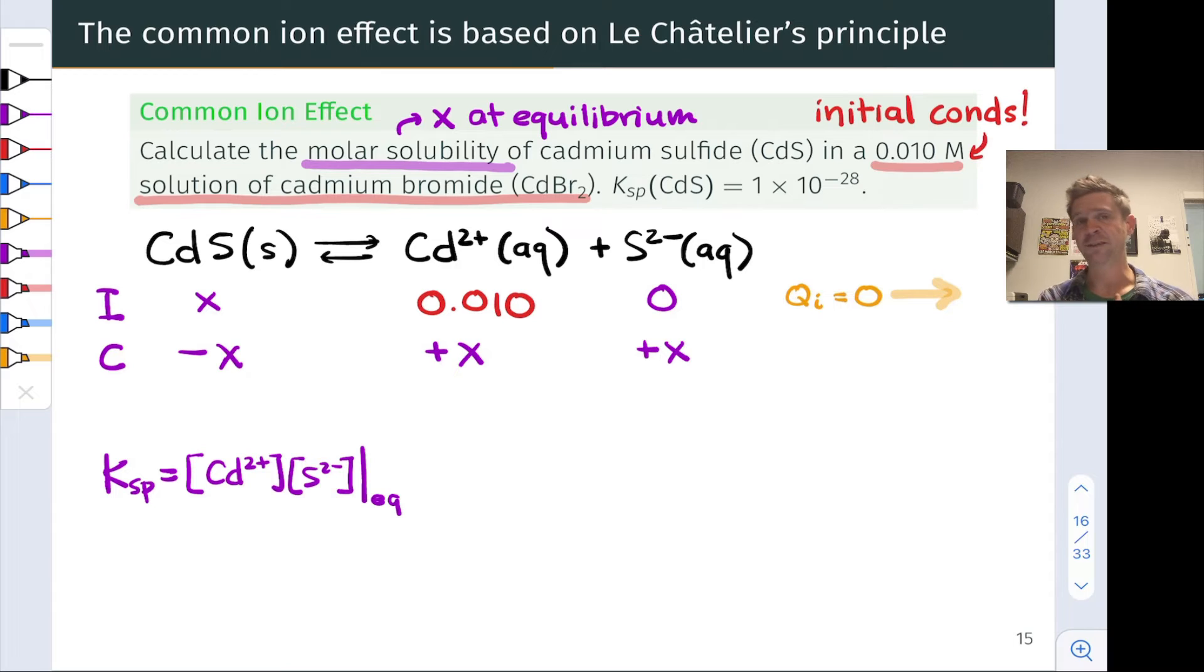The change is minus x on the solid side as some of that solid dissolves, and plus x for cadmium 2+, and plus x for the sulfide, as the Cd²⁺ and S²⁻ ions go into solution and become dissolved.